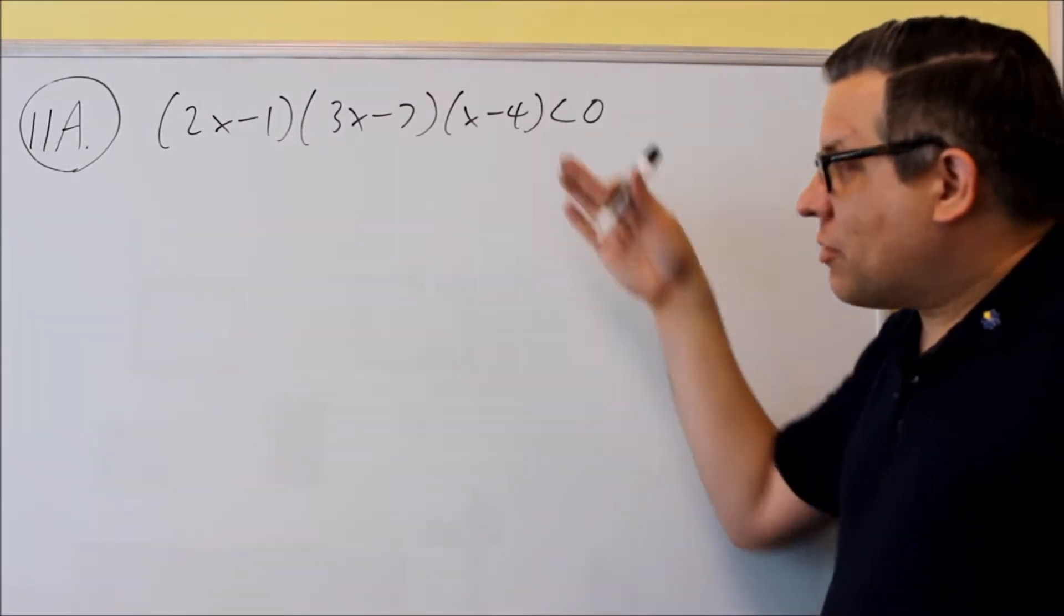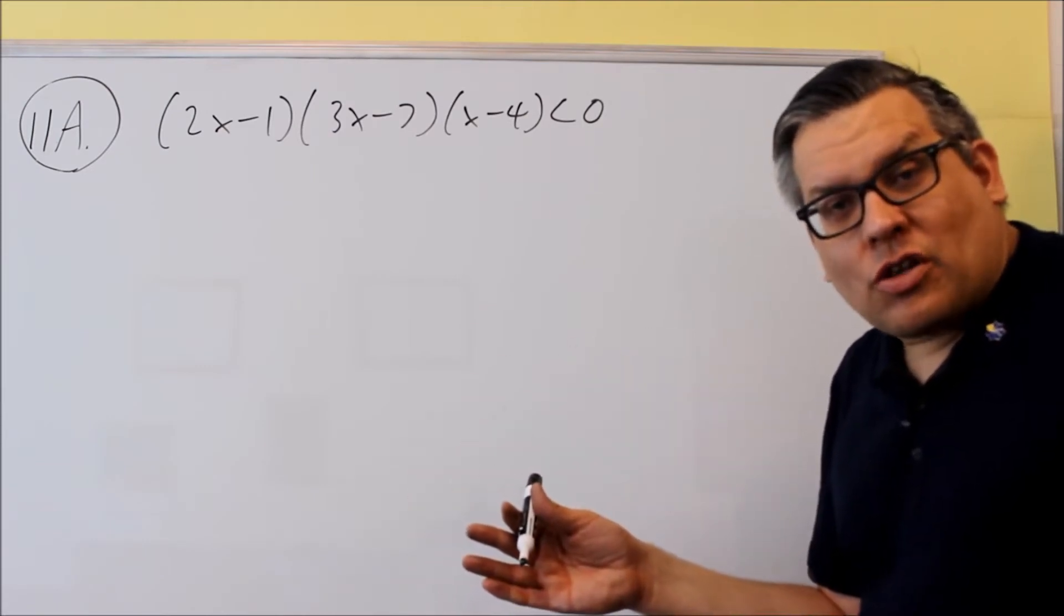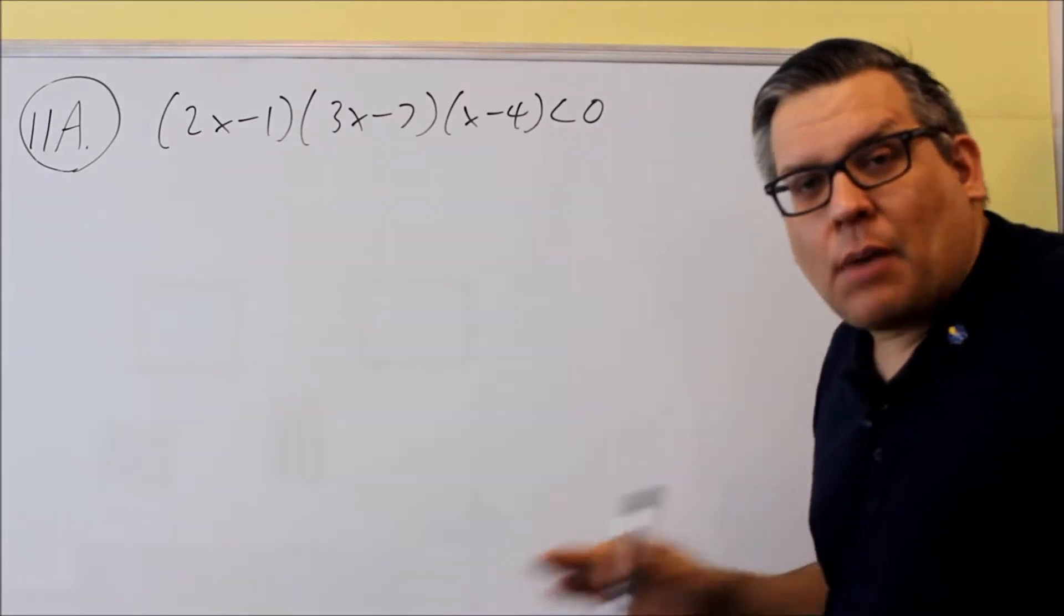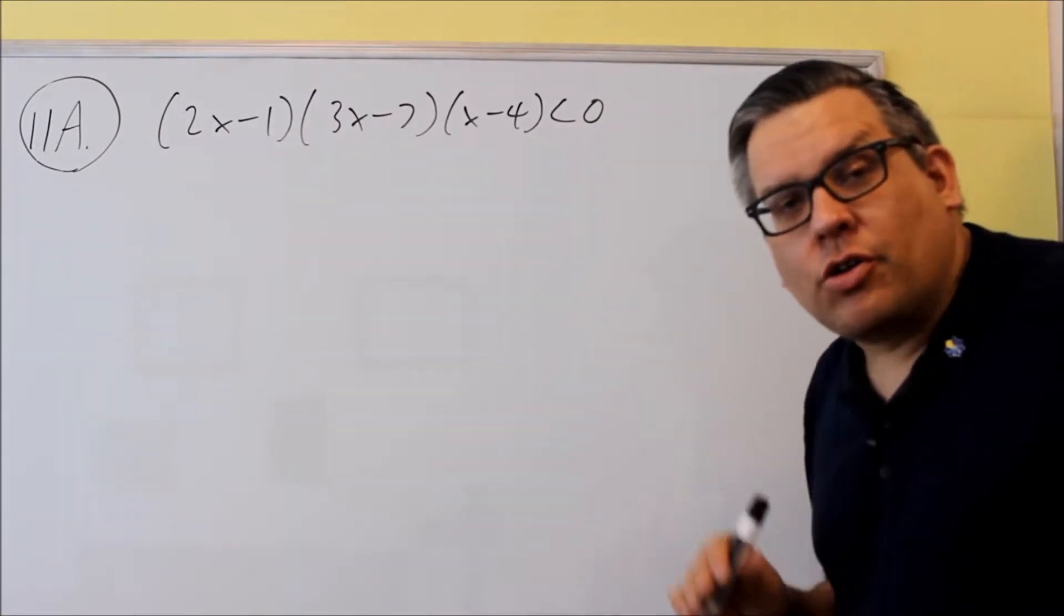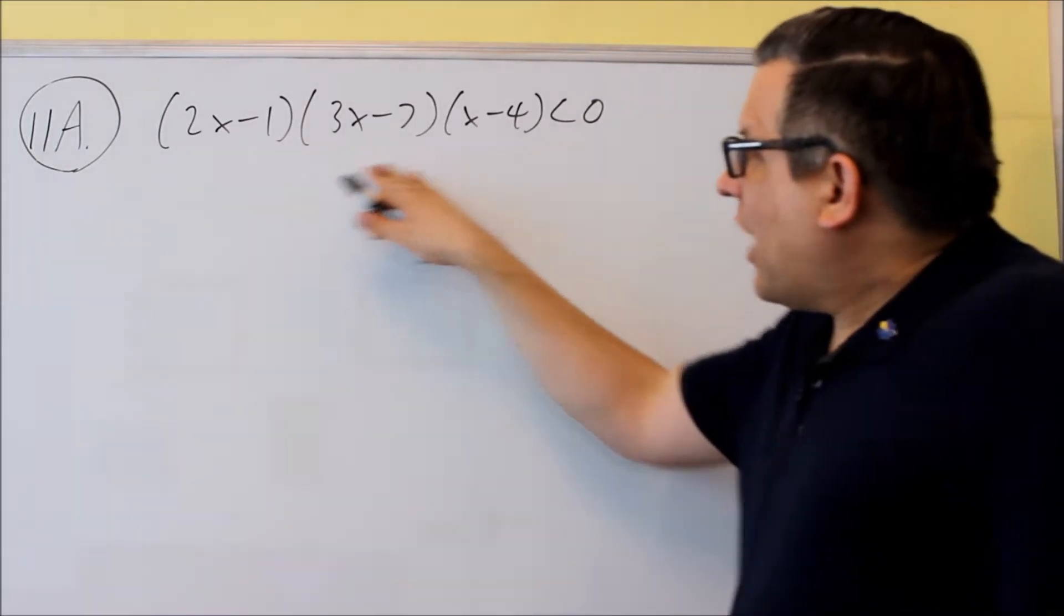So the process is going to be solved the same, and when I originally introduced this in the notes, I talked about there's two different methods. You could use the number line method, or you can use the table method. Now I'm going to use the table method here, but you could use either method.